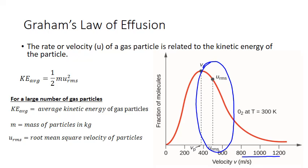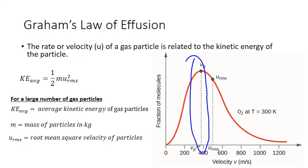The root mean square velocity is defined as the square root of the average of the squares of the velocities of each of those particles. It's just a little bit higher than the peak of the distribution, reflecting the fact that there are a few more particles on the higher end that must be accounted for in our average. So we use the root mean square velocity in our calculation of average kinetic energy.